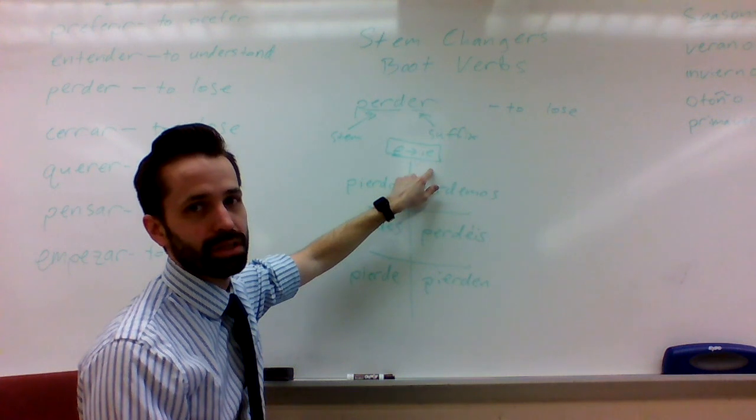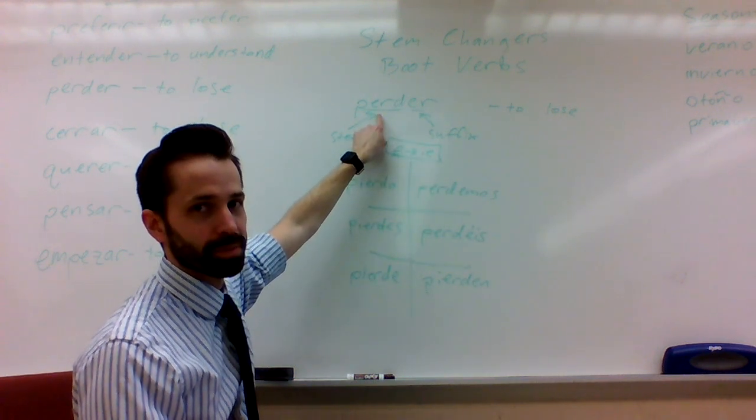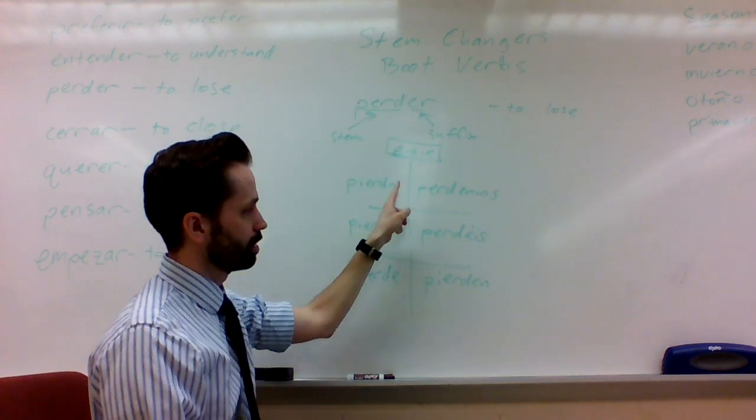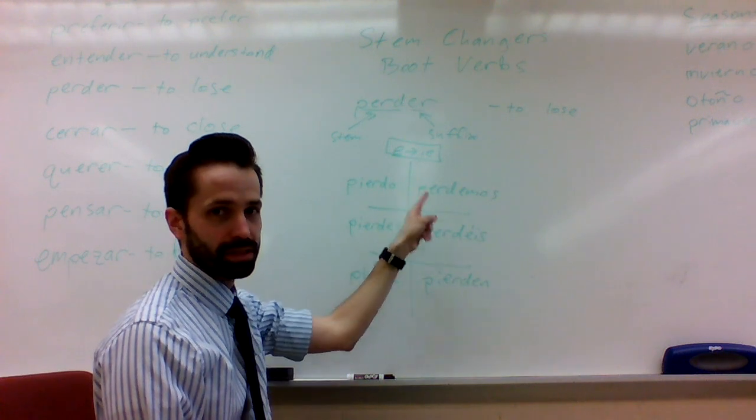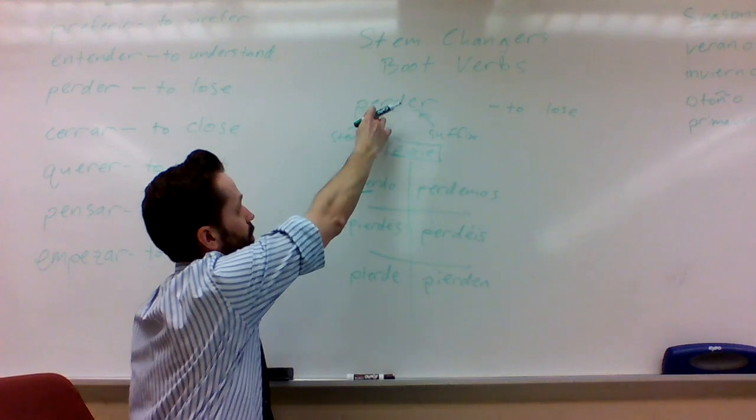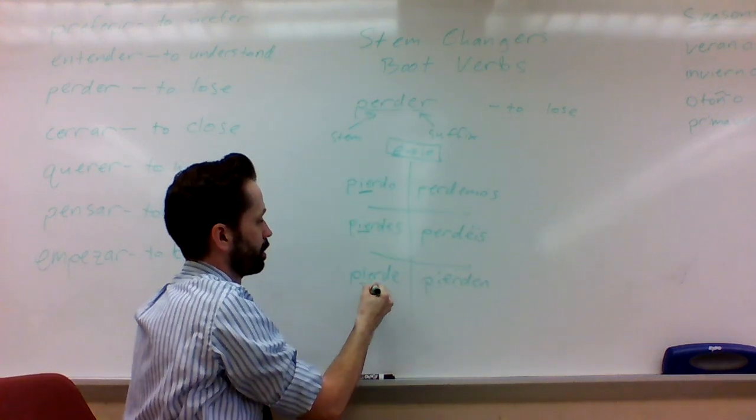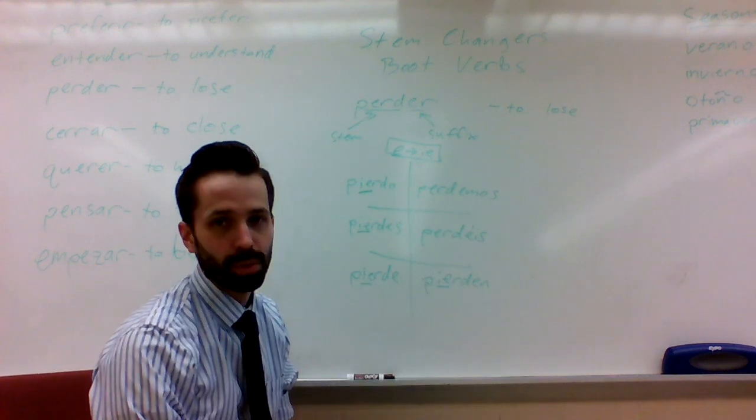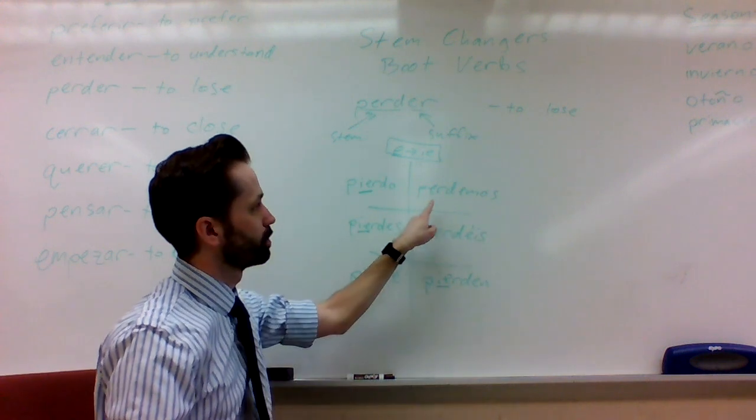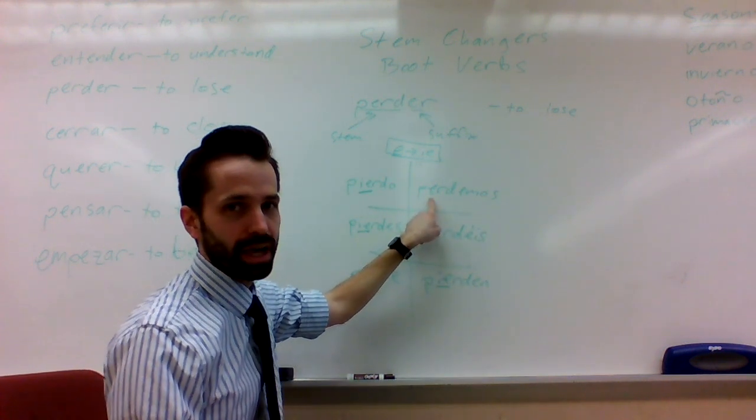Since these are called E to IE stem-changers, you can probably guess that the E in the stem is what's going to be changing, and it'll change from an E into an IE when you conjugate it. So if you look down here in these conjugated verbs, you can see that these E's, they were E's here, and now they're IE's here. Which is really important to do. The hard part about it is that not all of them do that. You can see that these two here stay E's and don't change into IE's.